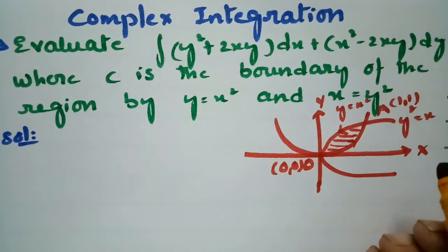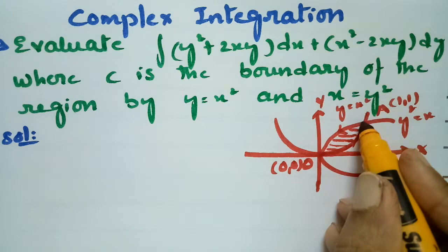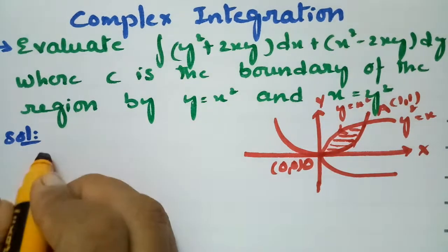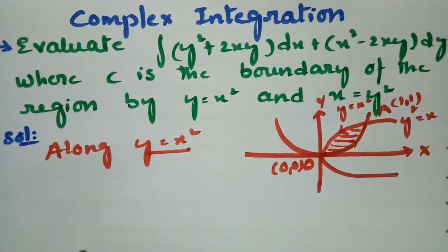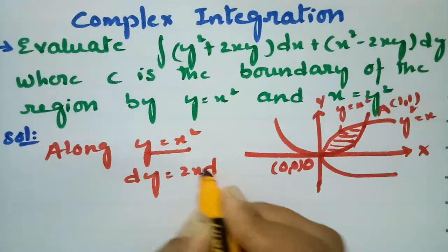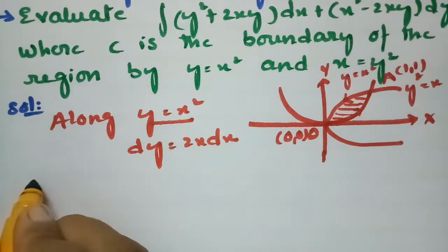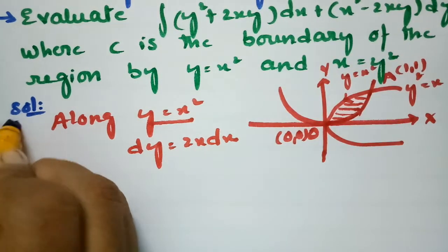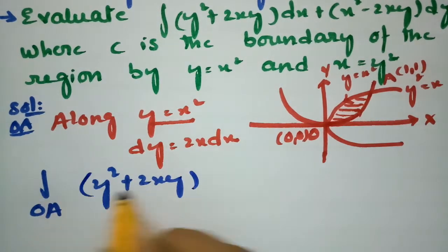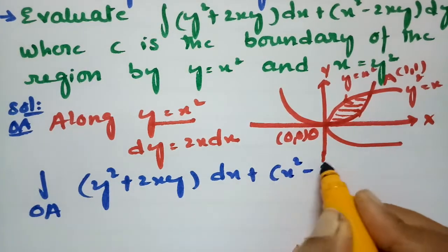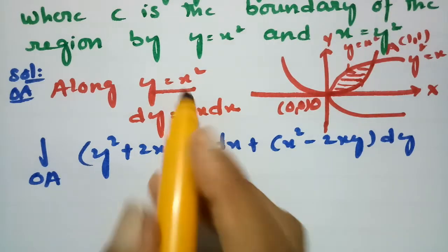First, I am going to take the curve y = x². Along this curve the limits go from 0 to 1, and along the next curve from 1 to 0. So first, along y = x², we have dy = 2x dx. Along OA, the integral becomes (y² + 2xy)dx + (x² − 2xy)dy, substituting y = x².